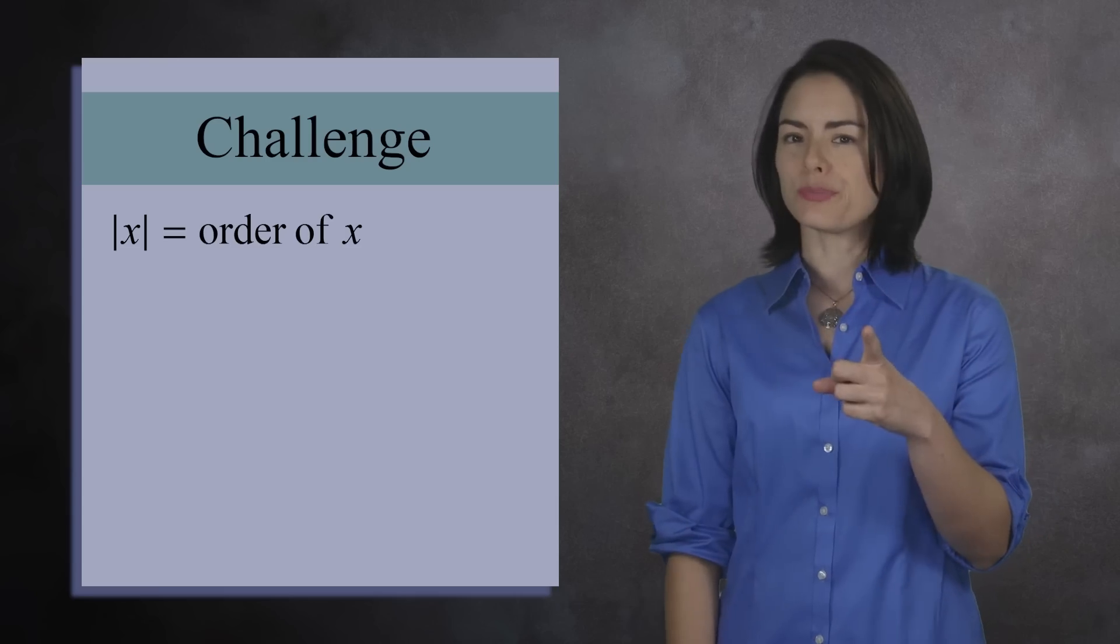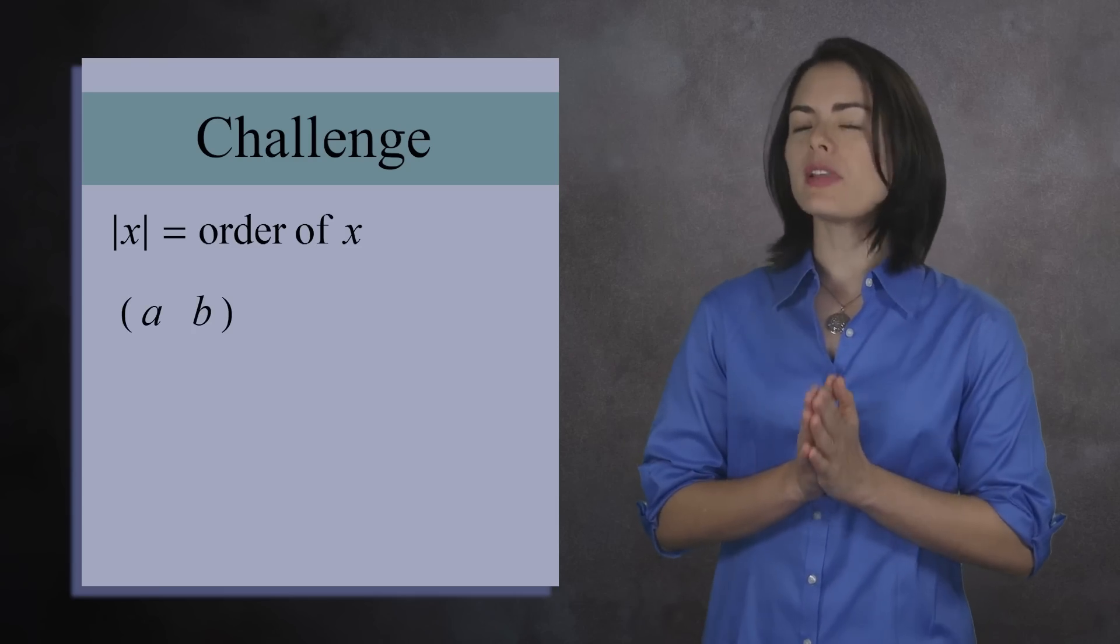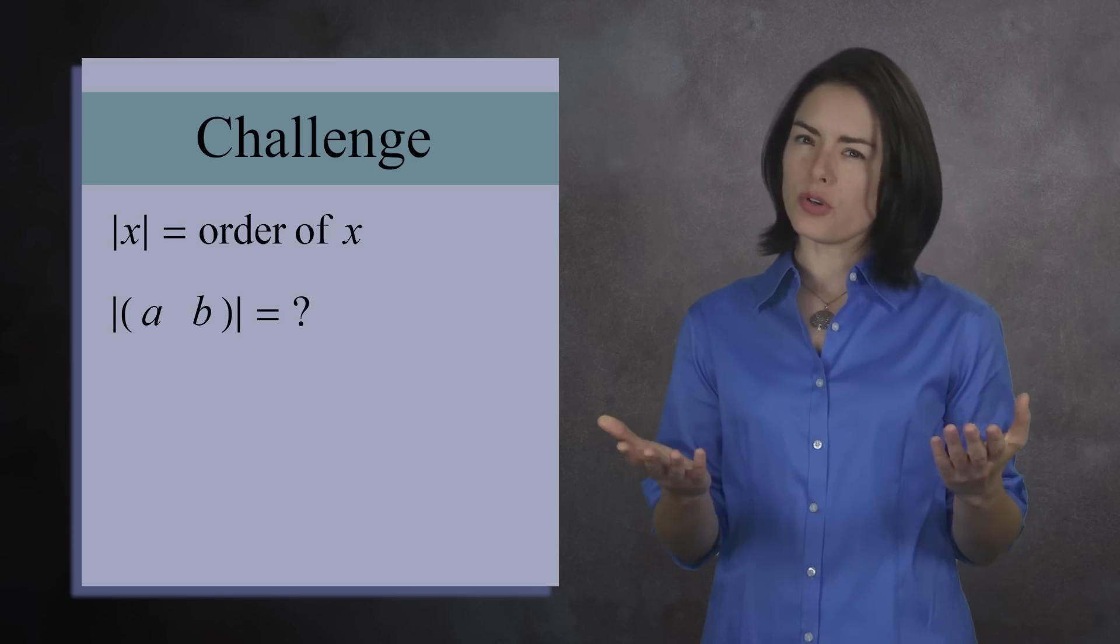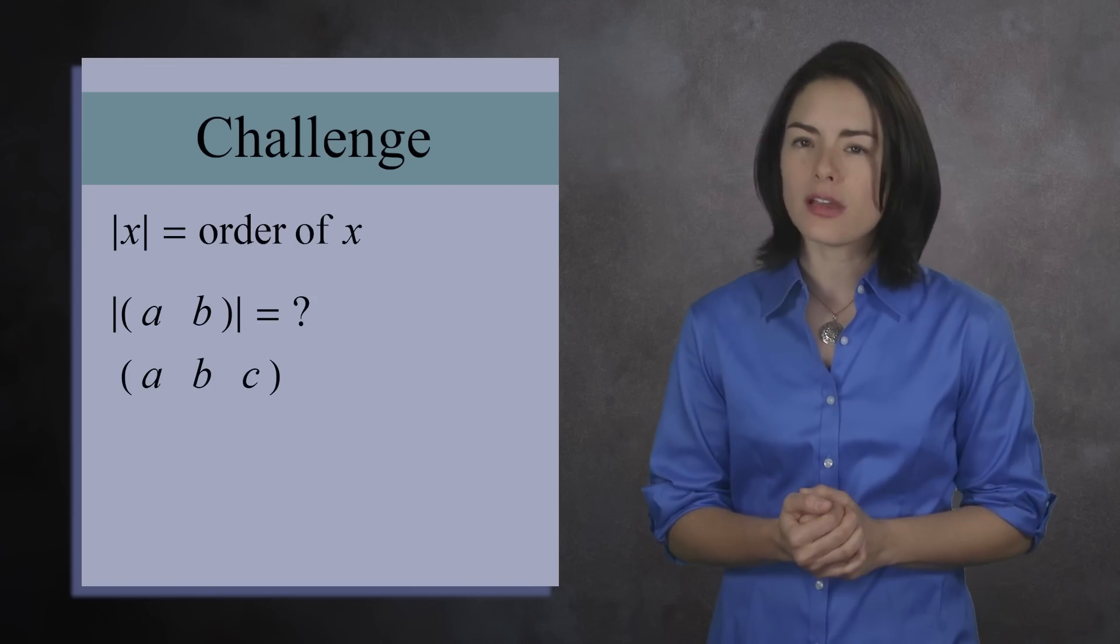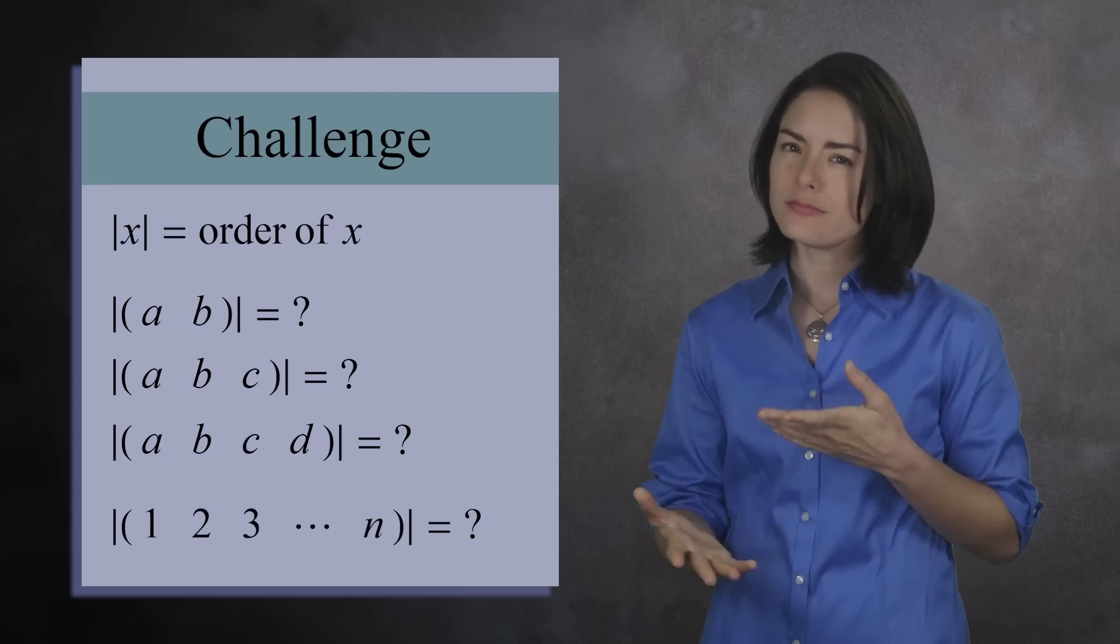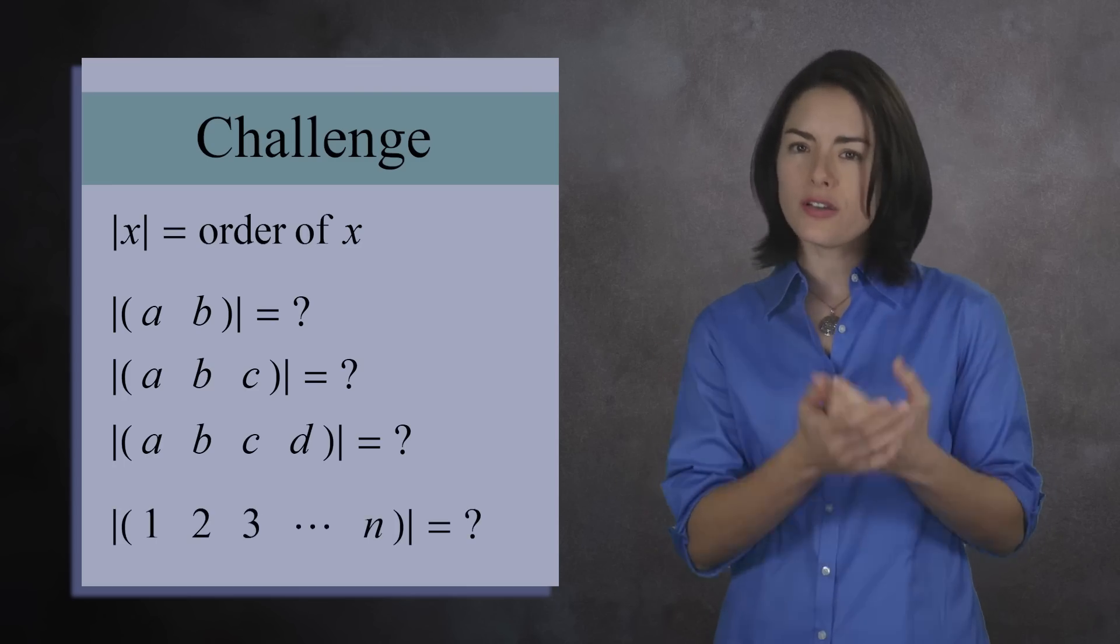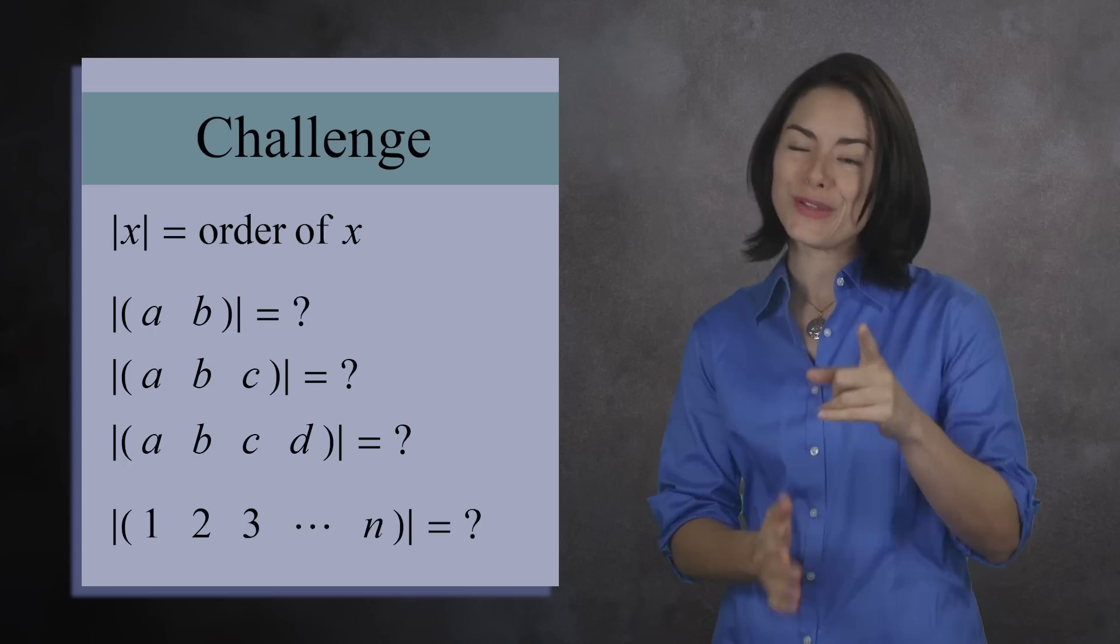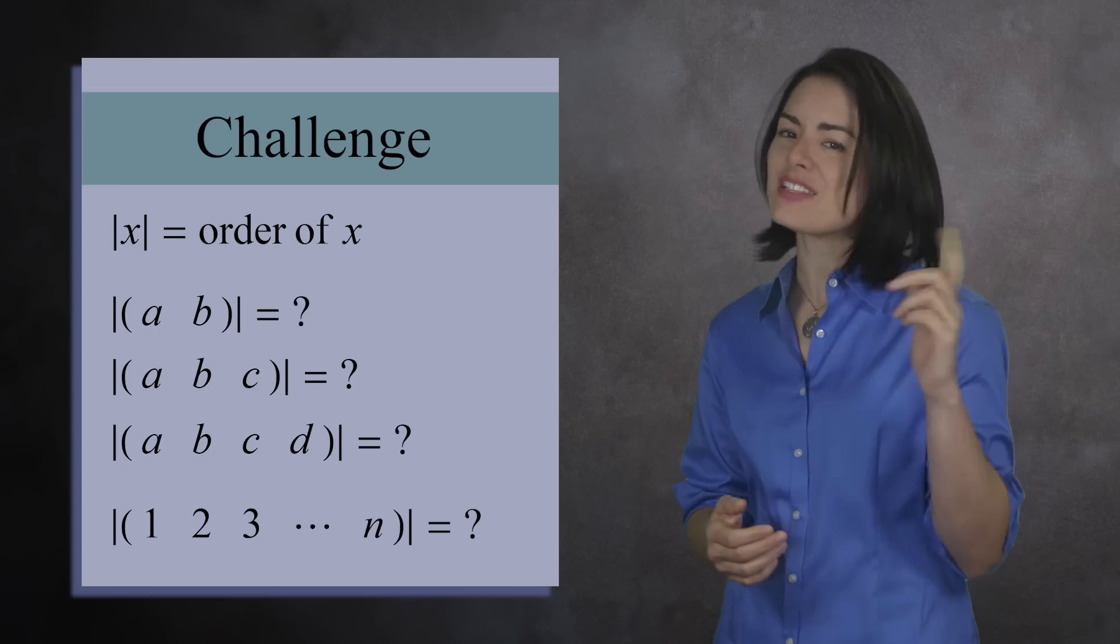Here is a challenge for you. Suppose you have a cycle of length 2. What is its order? Next, pick a cycle of length 3 and compute its order. What about a 4 cycle? Do you see a pattern? Please share your conjectures and try to convince us it's true. Good luck, thank you, and have a nice day.